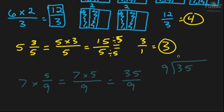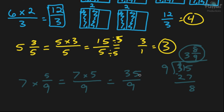Nine goes into thirty-five three times, which is three times nine is twenty-seven. Then you subtract — you have to borrow a one. Fifteen minus seven is eight, and that three becomes a two, and two minus two is zero. So you have a remainder of eight, and you write your remainder as eight-ninths. So three and eight-ninths would be your final answer. I hope this makes a little sense. In the next lesson, we'll explore multiplying two fractions together.